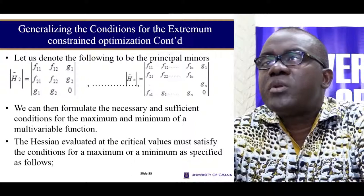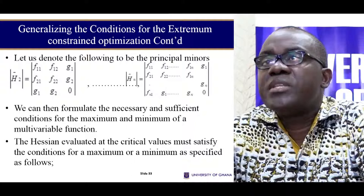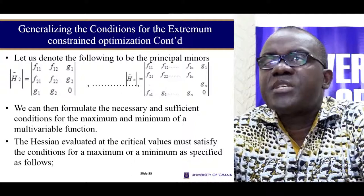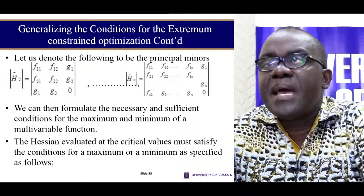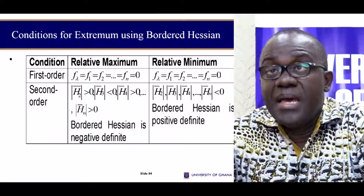What happens is that if we denote what you have over here as the principal minors — recall I told you the principal minors are that we try to look at all the matrices in the middle — the first principal minor is what we have over here and then it goes on to have the n-dimensional principal minor. Then the conditions for a maximum or a minimum is what we have over here.